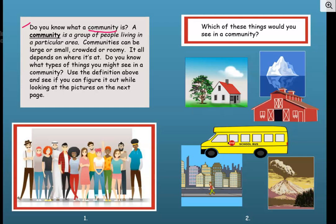Which of these things would you see in a community? Do you think you would see a house in a community? Well, if we use the definition — a group of people living in a particular area — then sure, we could see a house in a community. People have to live in a home. How about an iceberg? No, people don't live near icebergs. A barn? Certainly. You see barns on farms, so a barn would be in a community. How about a school bus? Sure — children ride on school buses, so it's definitely in a community.